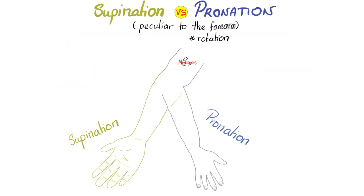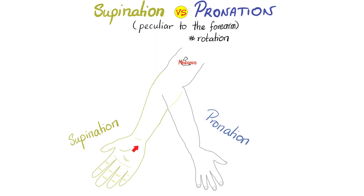There is more: supination versus pronation. This movement is unique to the forearm — you do not find it just anywhere in the body. These are rotation movements. Supination is when your palm is facing the sky; when you flip it so the palm faces the ground, that is pronation.